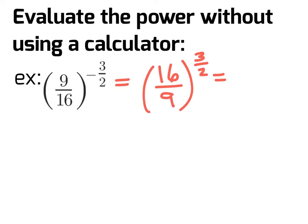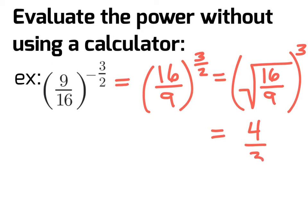We can rewrite that as the square root of 16/9, all to the power of 3. The square root of 16 is 4, and the square root of 9 is 3, giving us 4/3 to the power of 3. Our final answer is 64/27.